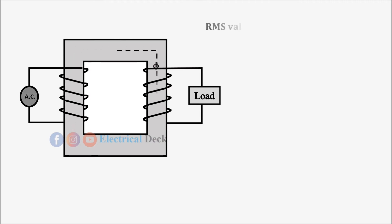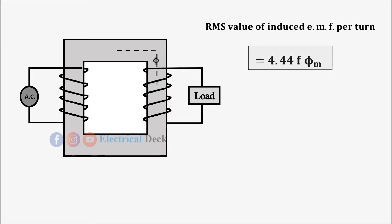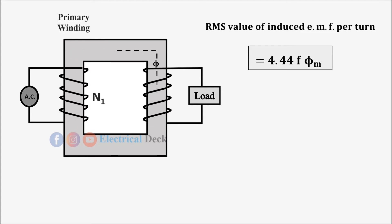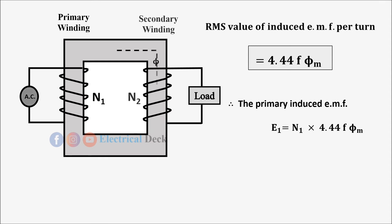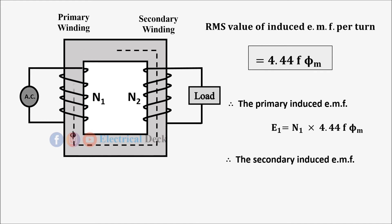We have derived the equation for RMS value of EMF induced per turn. Now let us find the equations for EMF induced in the primary and secondary windings. For N1 number of turns in the primary winding, the RMS value of primary induced EMF is E1 = N1 × 4.44·f·φm. Similarly, for the secondary winding, the RMS value of secondary induced EMF is E2 = N2 × 4.44·f·φm. These expressions are called the EMF equations of a transformer.